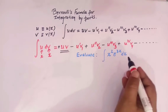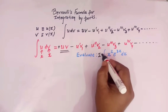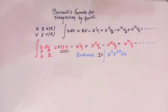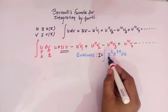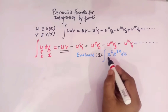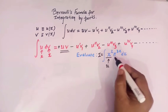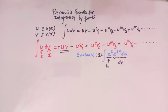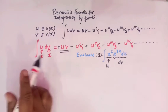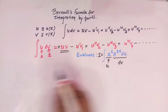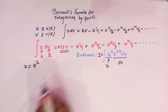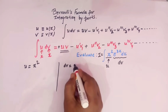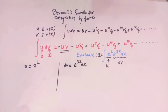Now viewers, let us take this example. Here we have to integrate x² · e^(3x) dx. We see that we have the product of two functions, so we can take x² as u and e^(3x) dx can be taken as dv. So comparing this integral with the formula, here we have u = x² and dv = e^(3x) dx.